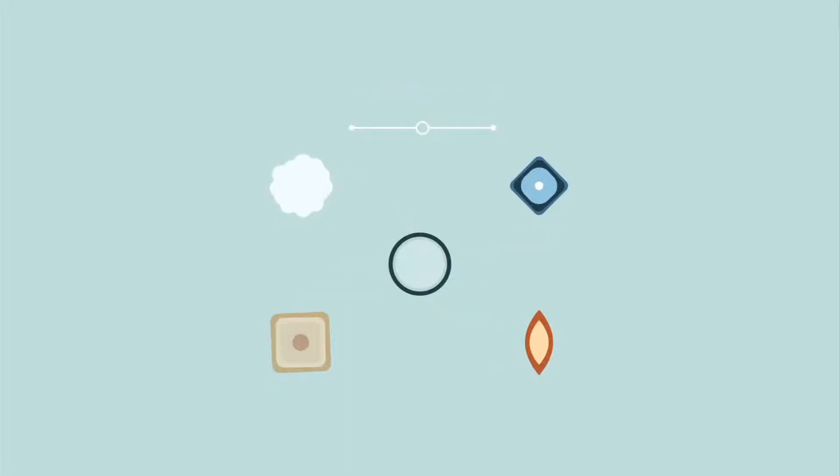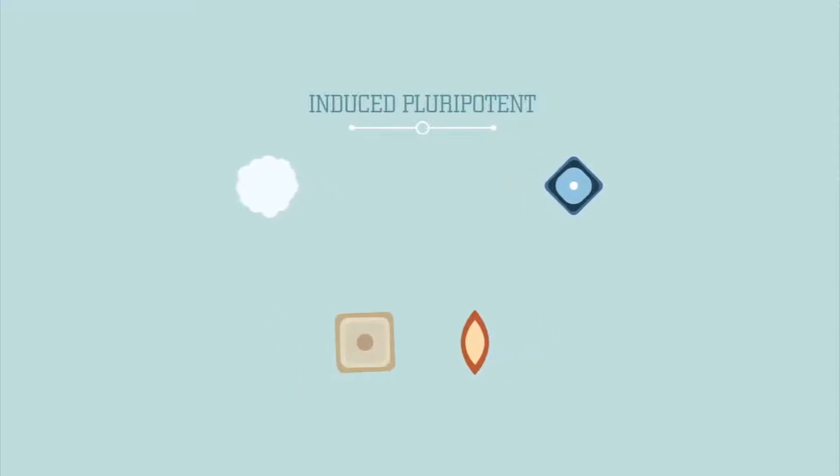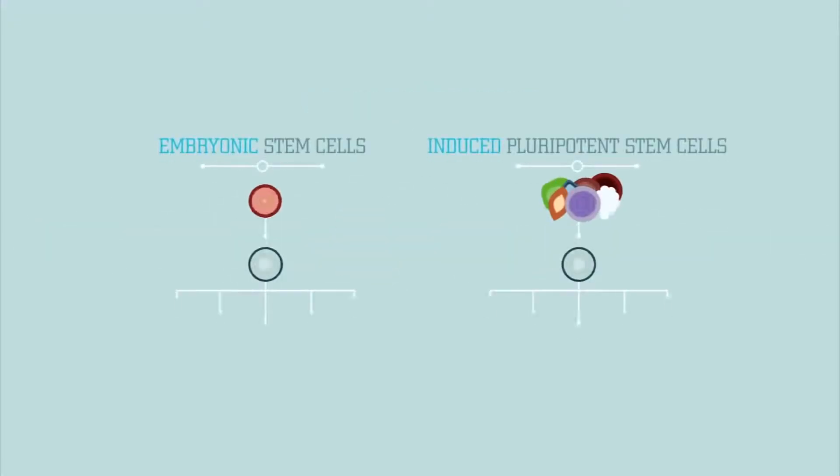A third kind of stem cells is called induced pluripotent stem cells. These are regular skin, fat, liver, or other cells that scientists have changed to behave like embryonic stem cells. Like embryonic stem cells, they too can become any kind of cell in the body.